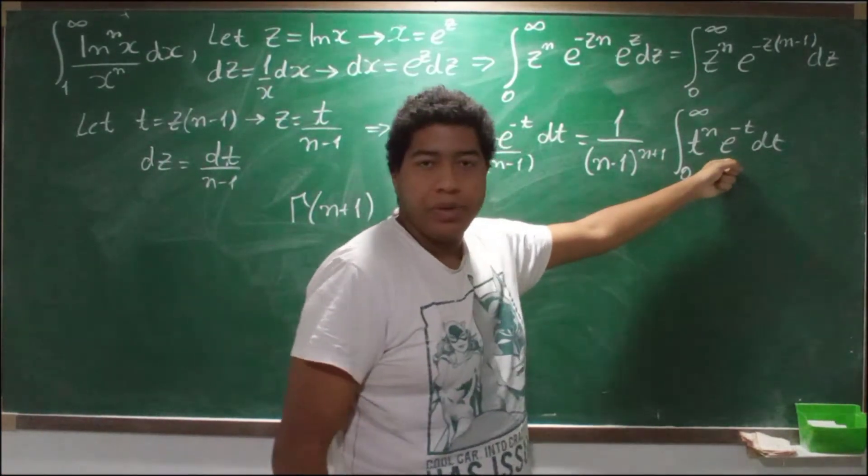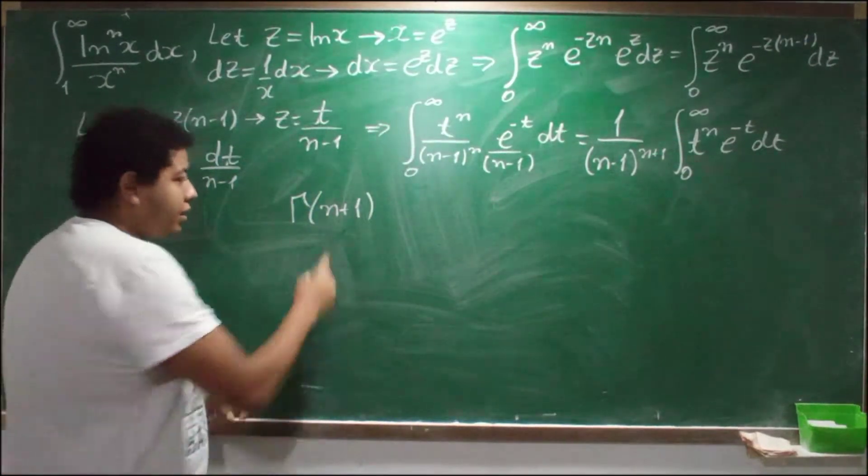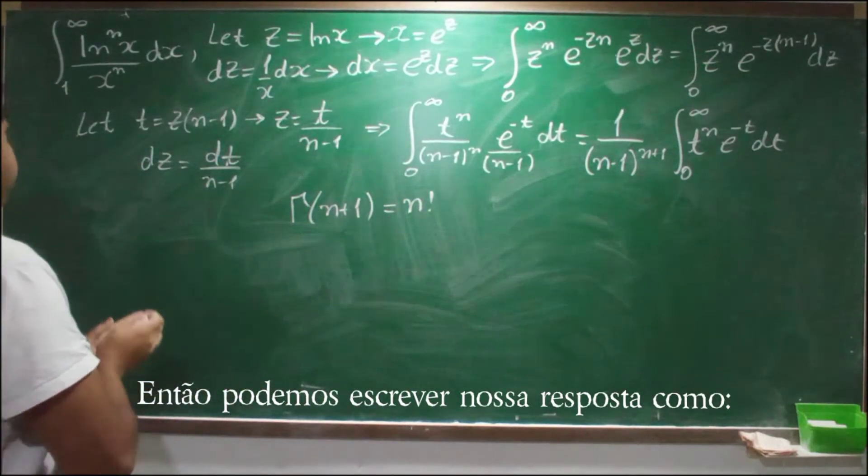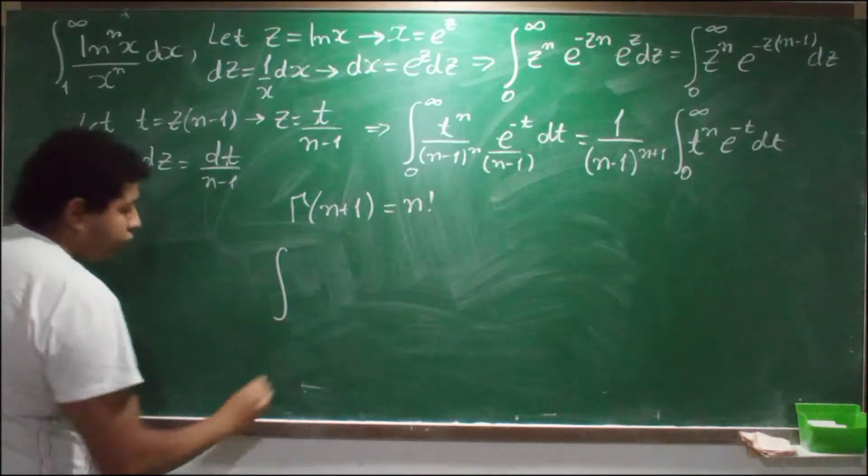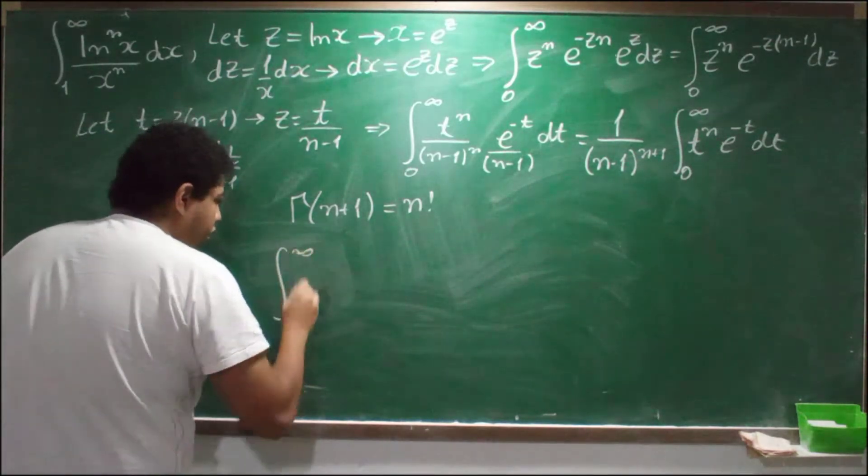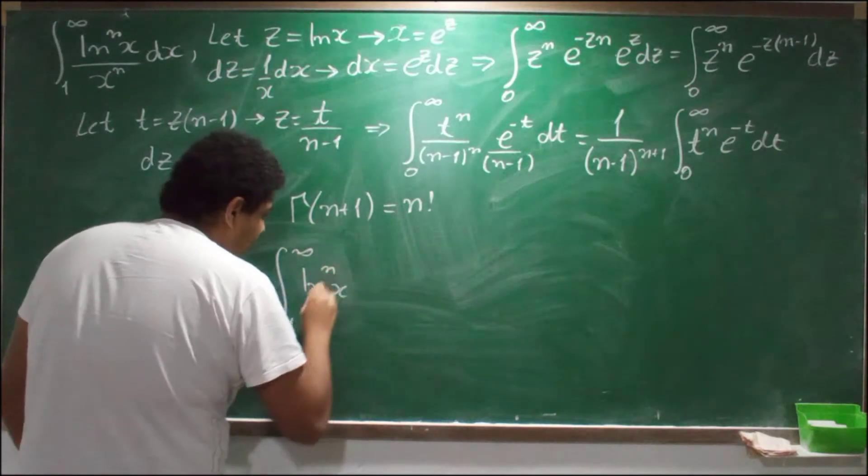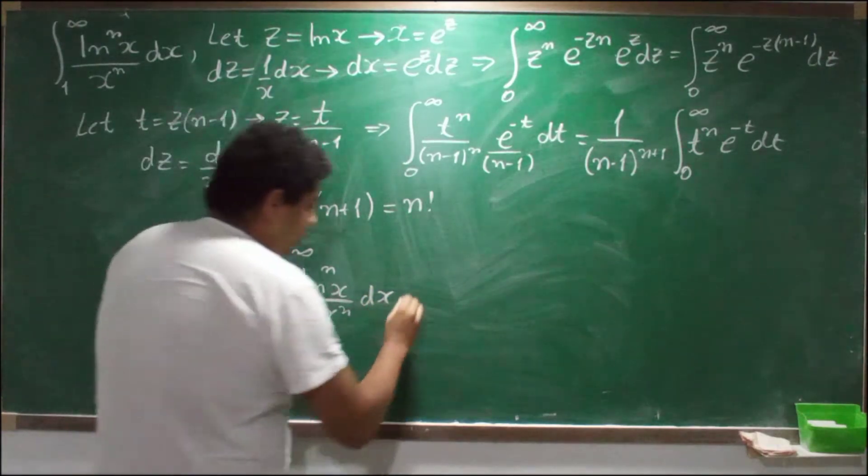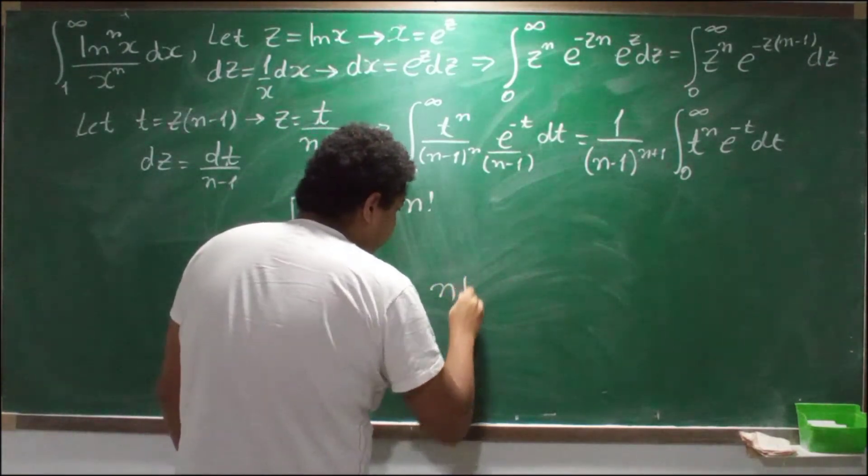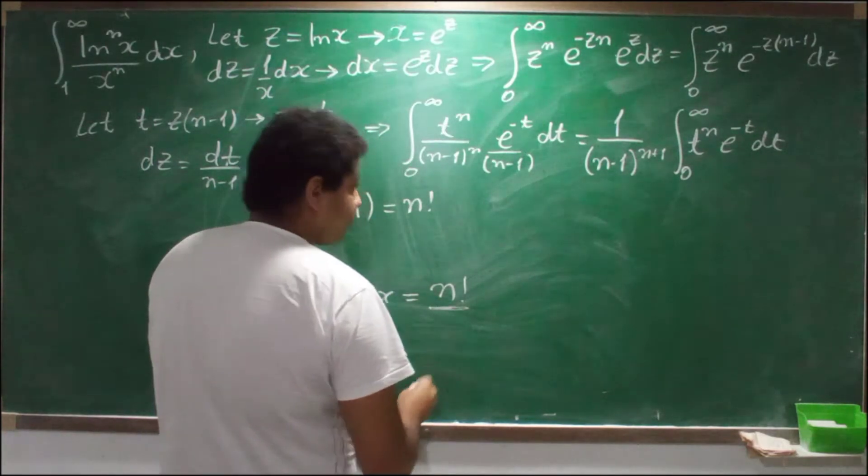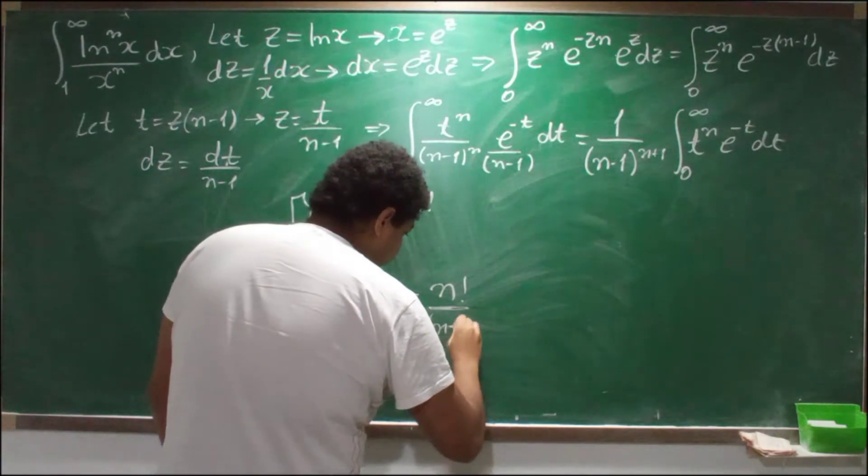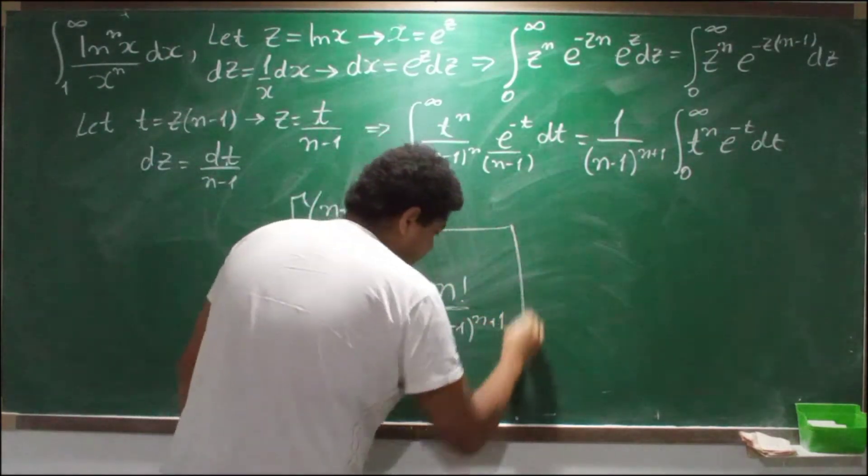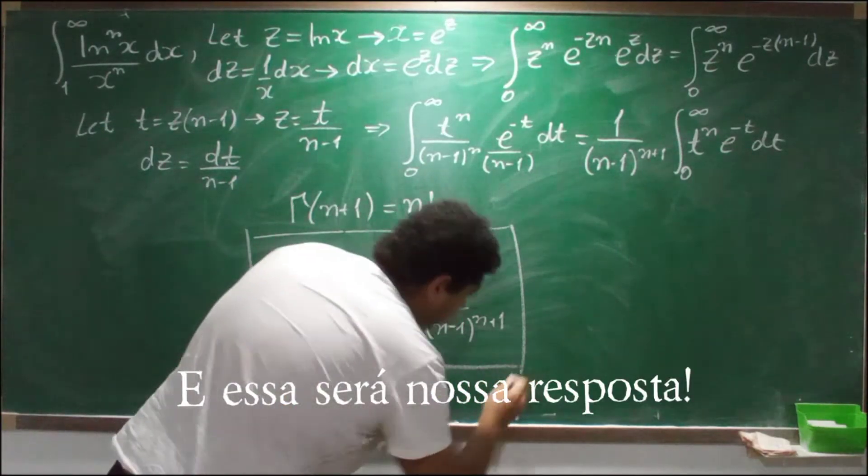This integral here is equal to that, and this here is equal to n factorial. So we can write our answer as the integral from 1 to infinity of ln of x to the n power over x to the n dx equals to n factorial over n minus 1 to the n plus 1. And this will be our answer.